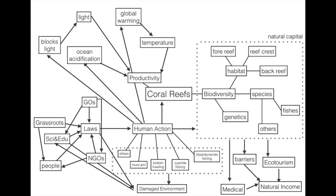Habitat refers to the range of different habitats in an ecosystem or biome. In a coral reef, there are three main different habitats: fore reefs, reef crests, and back reefs.